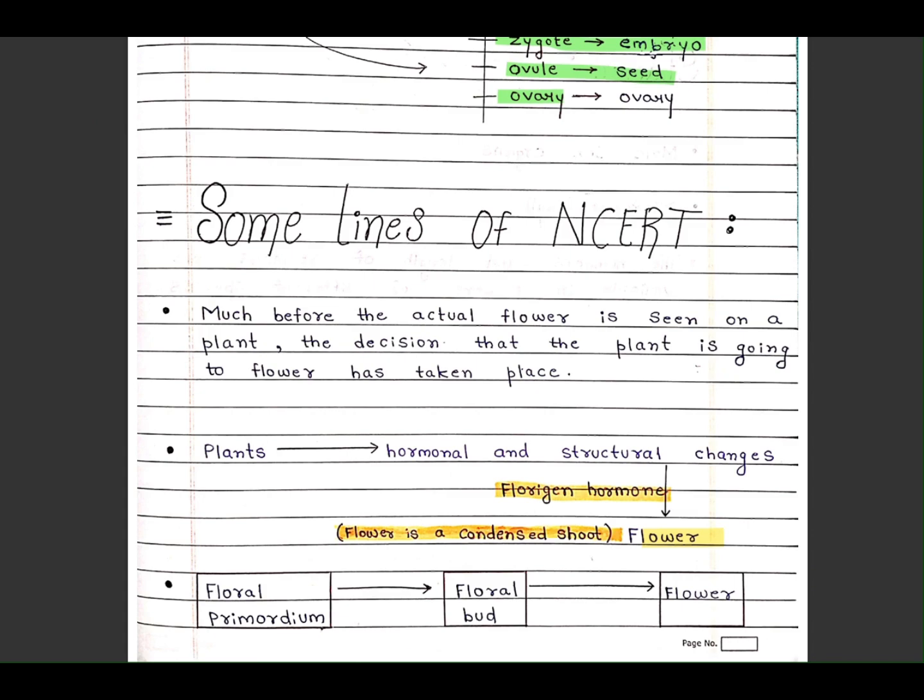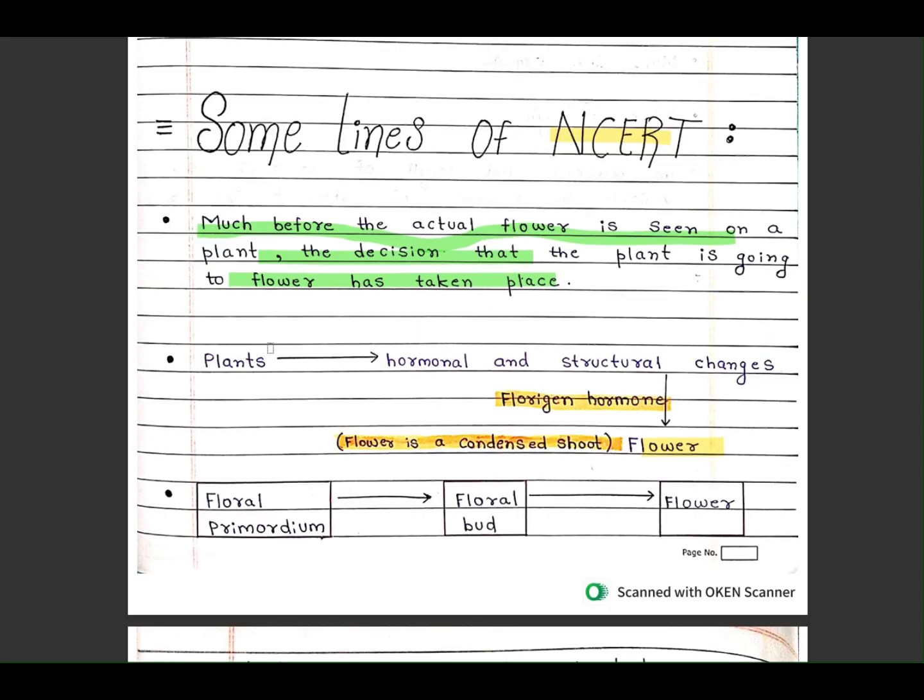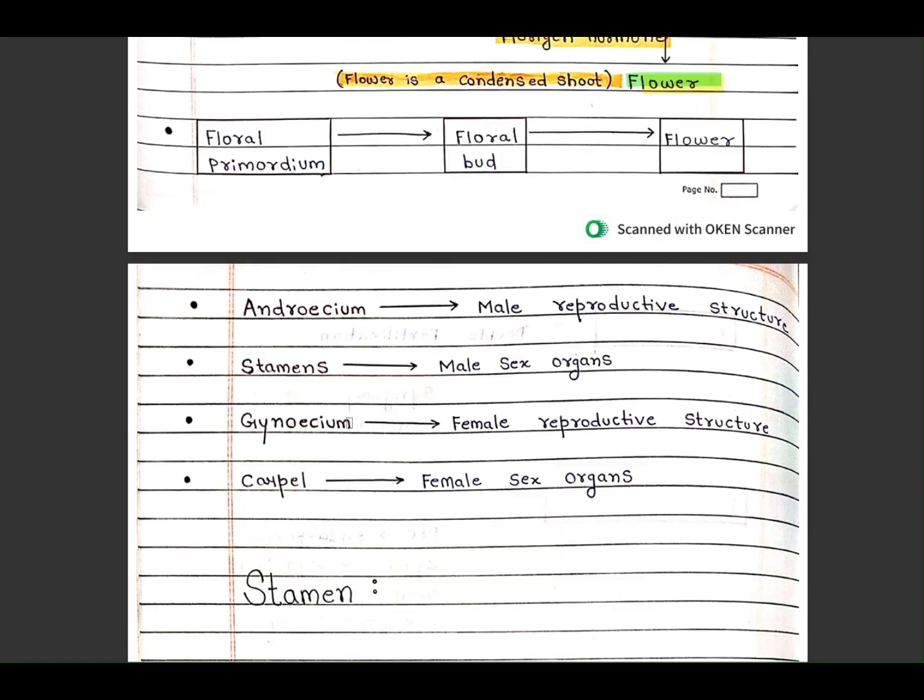Some important lines of NCERT. Much before the actual flower is seen on a plant, the decision that the plant is going to flower has been taken. In plants, hormonal and structural changes occur and it makes a flower.